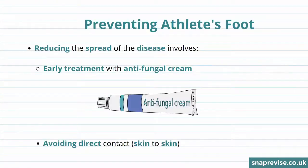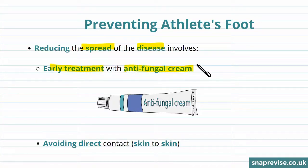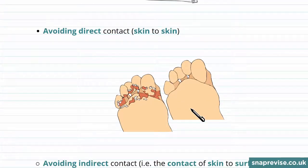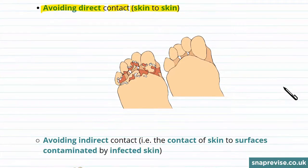So now let's talk about preventing Athlete's Foot. No one wants Athlete's Foot, and reducing the spread of disease involves early treatment with antifungal cream. This kills the fungus that causes Athlete's Foot. Another way of reducing spread is to avoid direct contact or skin-to-skin contact, because the fungus can be transferred in this way and the person could get infected.